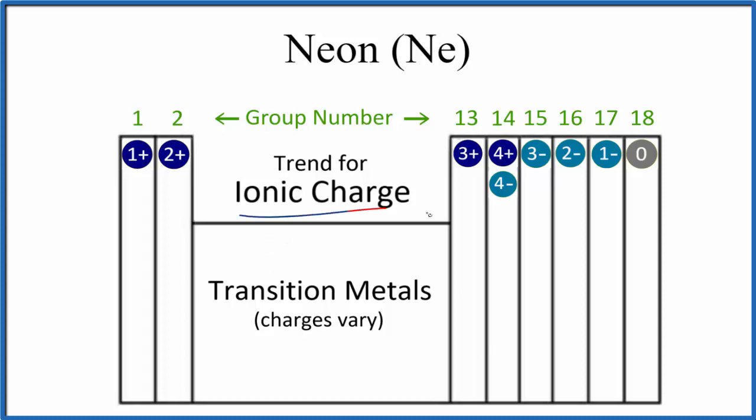We have this general trend for ionic charge: elements in group 1 form ions that are 1+, group 2 are 2+. We skip the transition metals, their charges vary, but then we have 13 which is 3+, and so on.